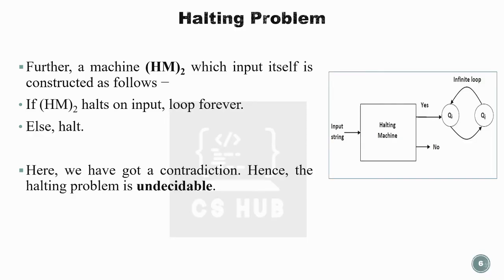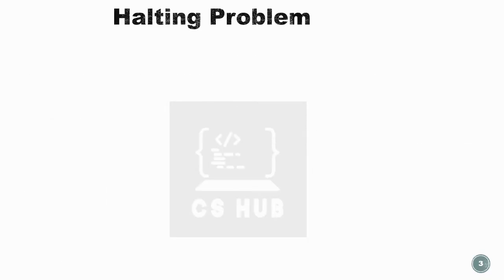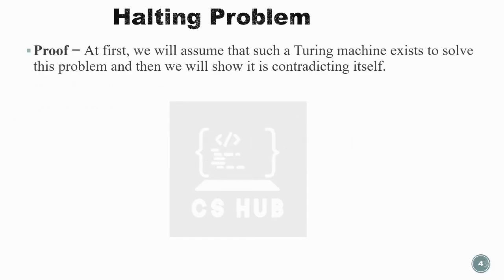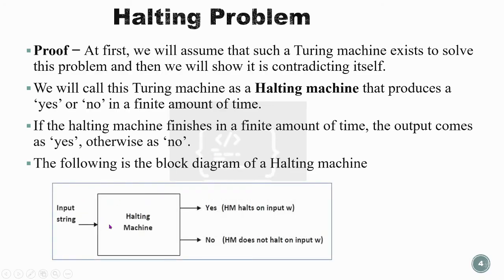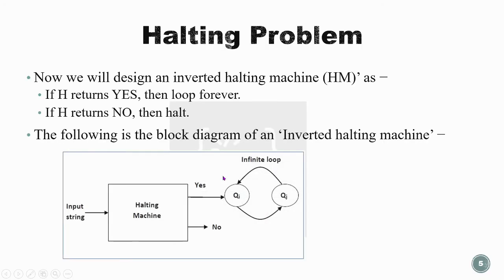To summarize the proof: we defined a halting machine HM that takes a Turing machine description and an input string, and outputs yes if it halts in a finite number of steps, otherwise no. Then we built an inverted halting machine HM', where yes leads to an infinite loop and no leads to a halt.